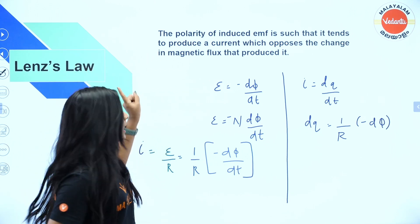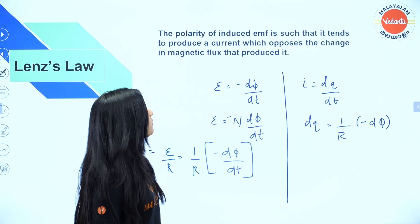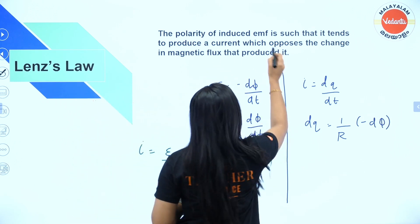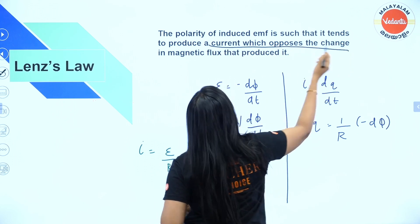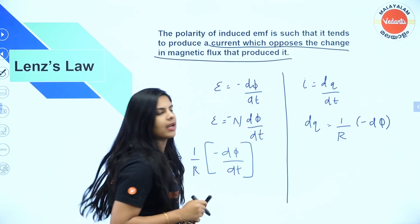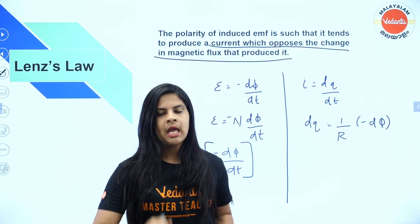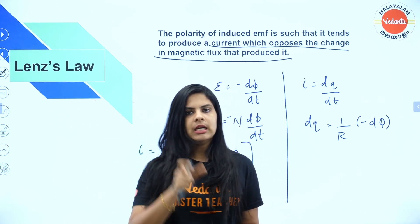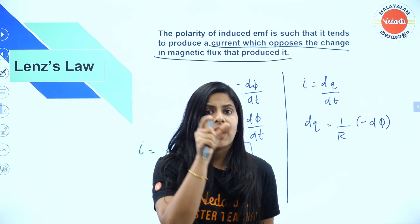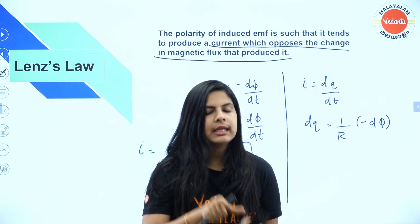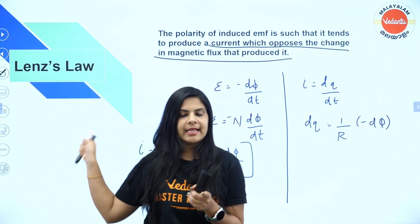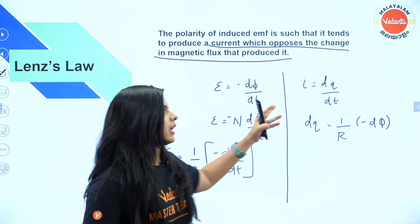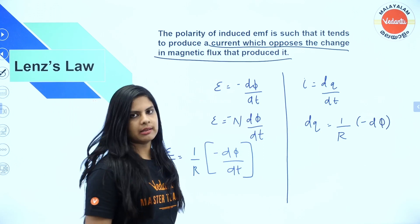Lenz's law states that the polarity of induced EMF is such that it tends to produce a current which opposes the change in magnetic flux that produced it. In Faraday's law, induced EMF equals dΦ/dt with a minus sign, and that minus sign justifies Lenz's law because the flux change opposes the change.